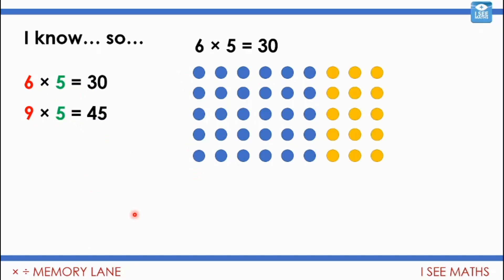We saw that we'll have more fives. We'll have three more lots of five. So six fives are 30, so nine fives must be 45.